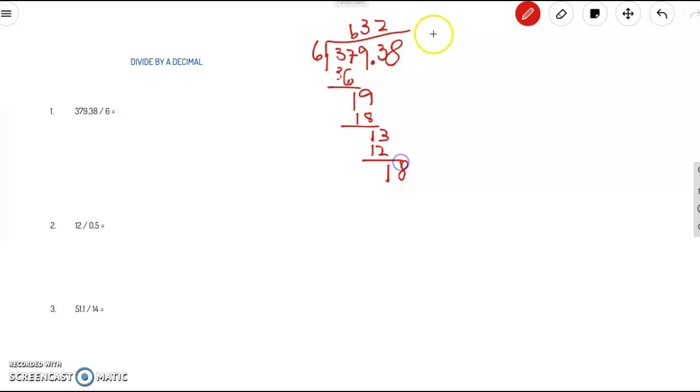Now let's bring down the 8. How many times is 6 going into 18? It goes in 3 times exactly. Remember to count the number of digits after the decimal here. So here we have 2 digits after the decimal point. So same thing here. And so our answer for number 1 is 63.23.